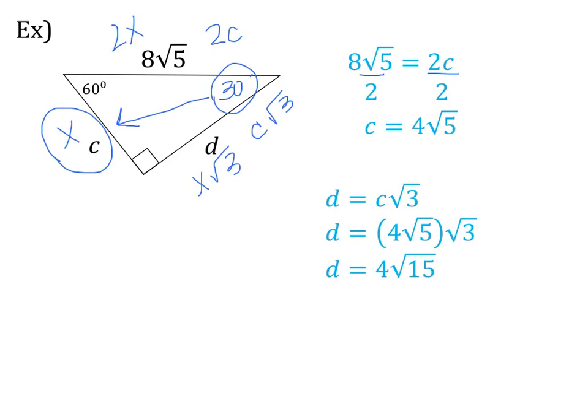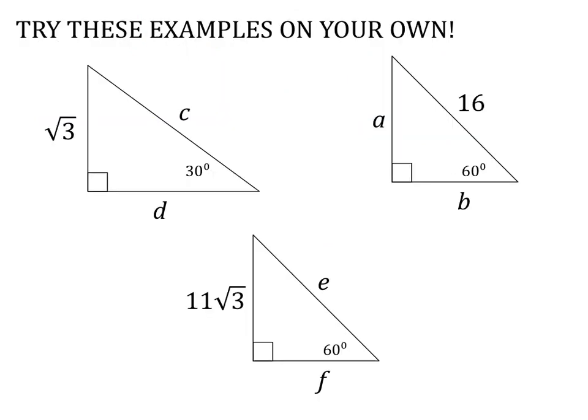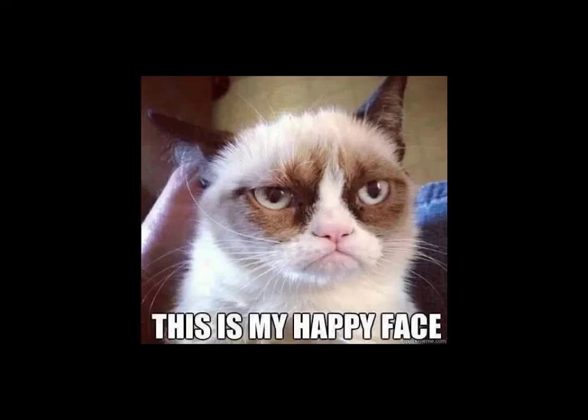We have to check if we can simplify √15. Well, 15 factors into 5 and 3, so no pair moves out of the radical. So the final answer is d = 4√15. Now try these three examples on your own — we'll check them in class. On each problem, find your 30-degree angle, circle it, draw your arrow, and list your pattern: x, 2x, and x√3, then solve for the letters asked. That is everything I have for you tonight. I am Grumpy Cat, and this is my happy face.